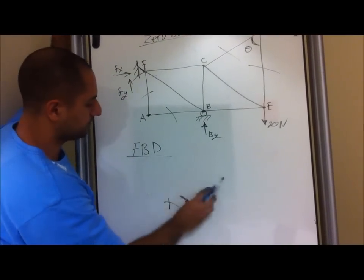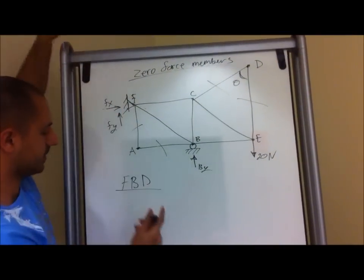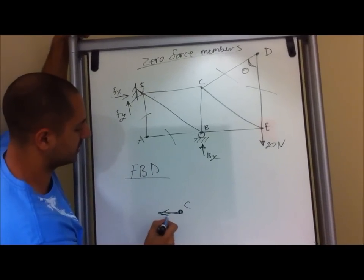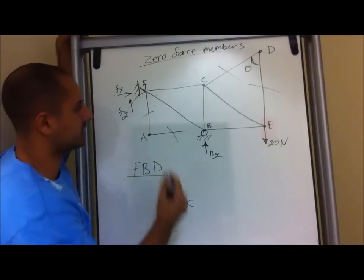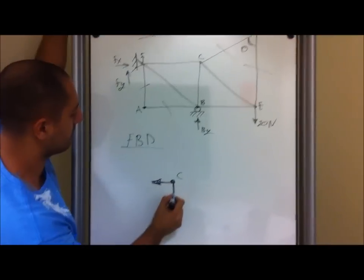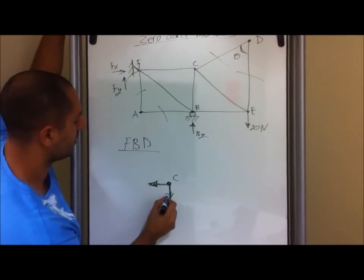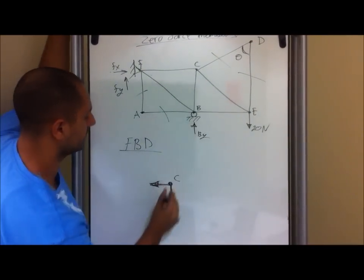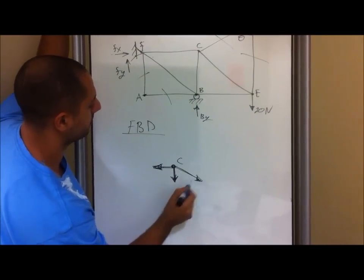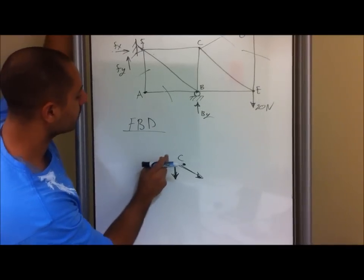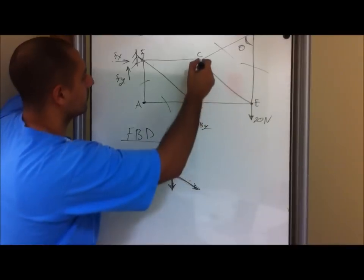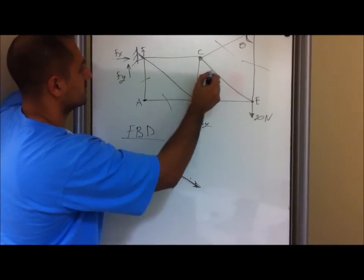Now you move on to point C. We said that this force right here actually has a value — it doesn't matter what value it is, but we know it has a value. And if you look over here, we have Vy, and also we have this force right here. This one has a value, so then this right here must have a value, and so that one is too. None of these are zero force members.